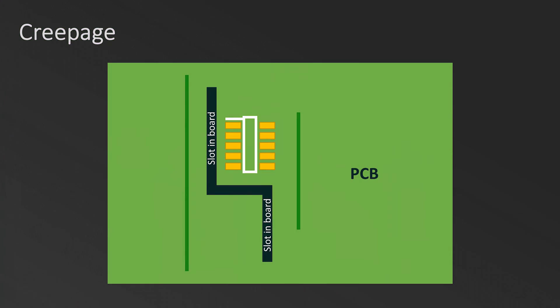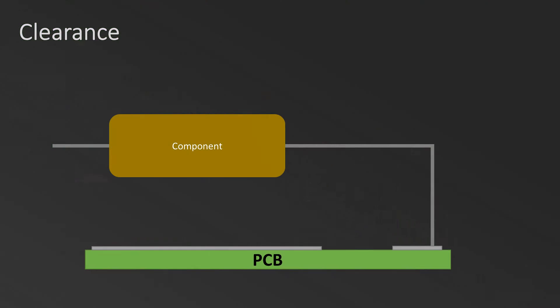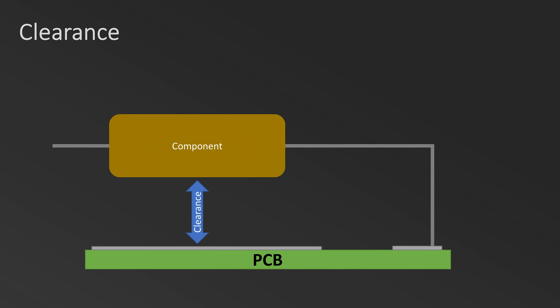Creepage and clearance are two ways to measure how far apart something is electrically. Creepage distance is a measure of how far apart two objects are across the surface of a circuit board. This can involve current creeping around corners, around the board edge, from top layer to bottom, reaching around routed slots — hence the name creepage. Clearance distance is a simpler measure: it's how far apart two conductive objects are with air between them, or an air gap — usually just the shortest straight-line distance since electricity takes the path of least resistance.